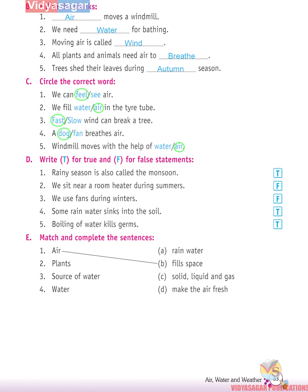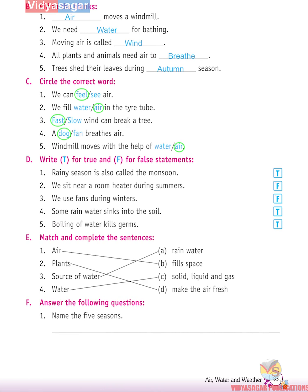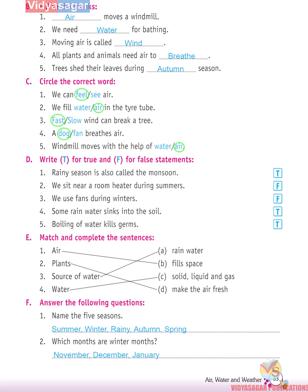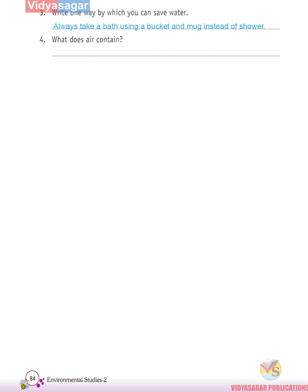Match and complete: Air fills space; water fills space. Plants make the air fresh. Sources of water include rain water, in solid, liquid, and gas states. Answer the following questions: The five seasons are summer, winter, rainy, autumn, and spring. Winter months are November, December, and January. One way to save water is to always take a bath using a bucket and mug instead of a shower. Air contains water vapor, many different gases, and dust particles.